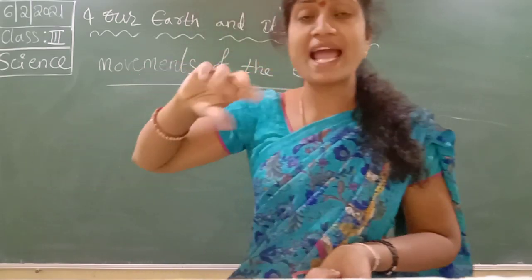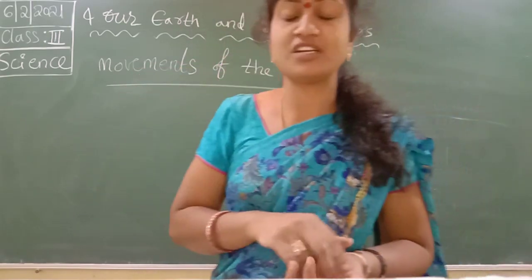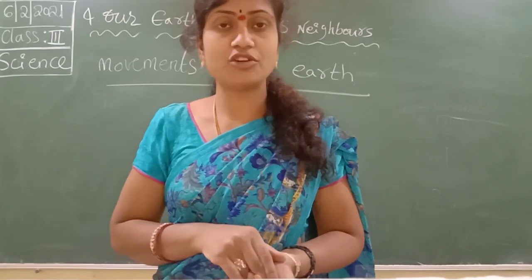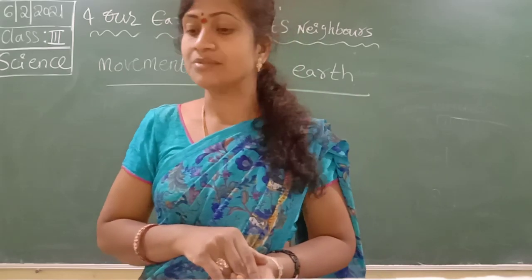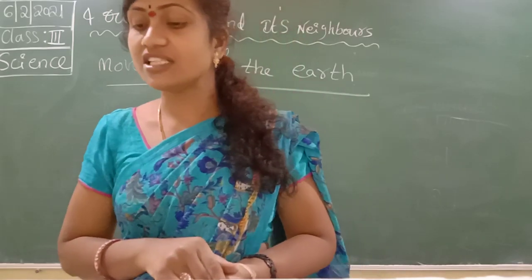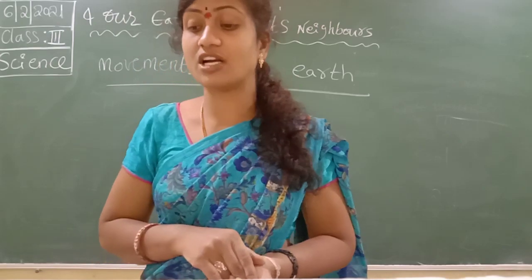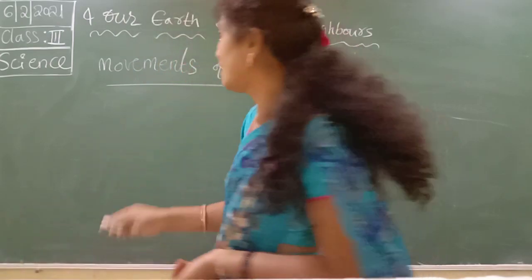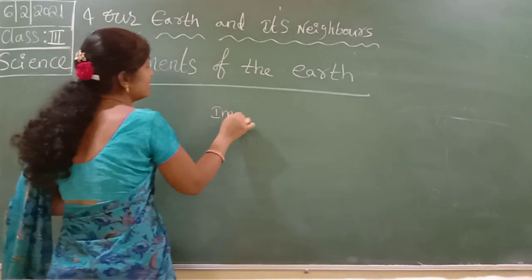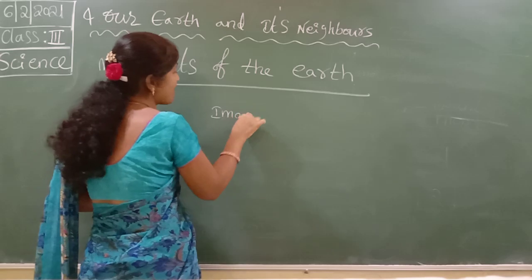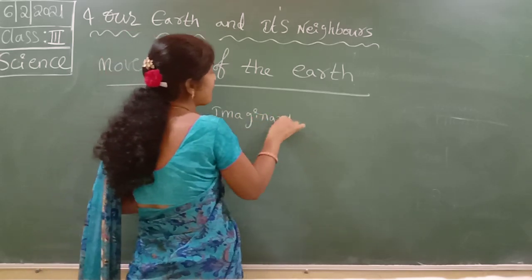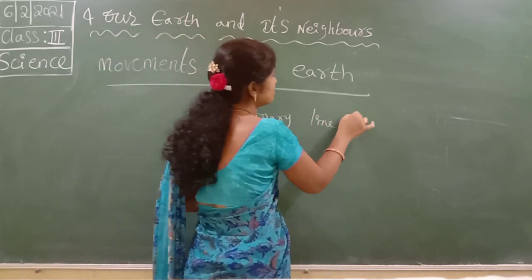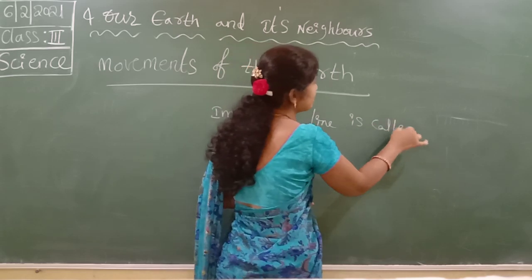When the bangle is spinning speedily, we have to observe clearly. Just we have to do the experiment. This imaginary line is called the axis. What is the imaginary line? This imaginary line is called axis.